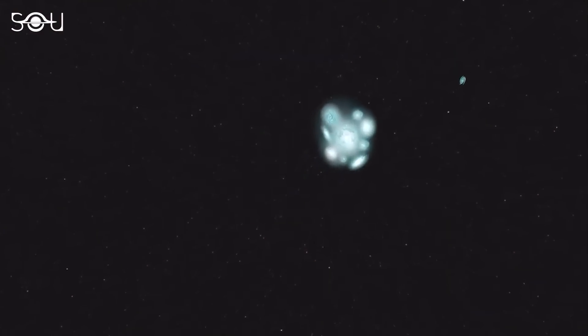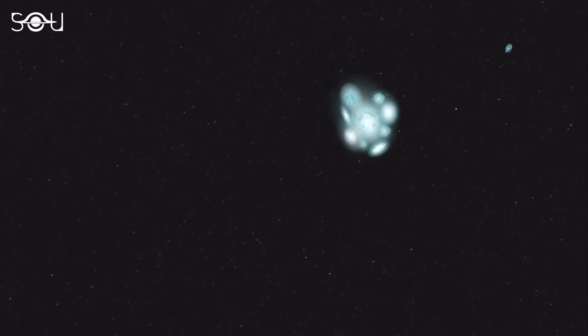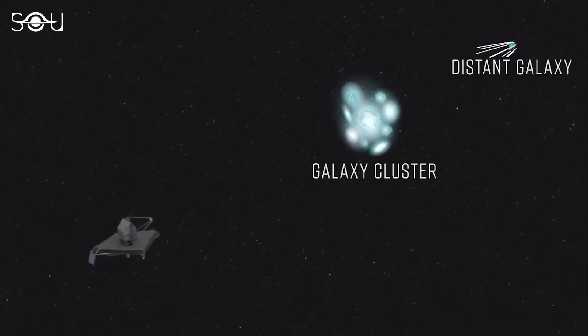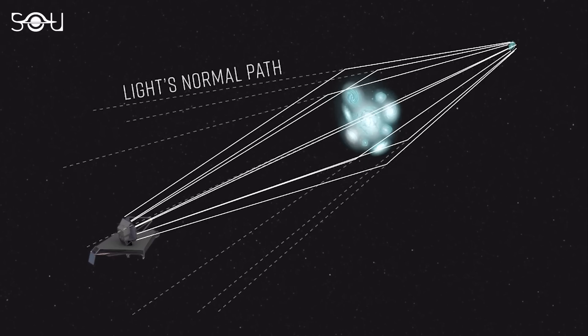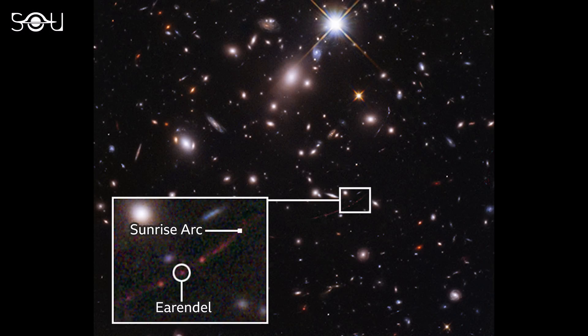Massive astronomical objects, such as galaxy clusters, distort the spacetime fabric around them. As a result of this distortion, the light from the foreground celestial bodies bends when it passes close to these massive objects. Because of this gravitational lensing, the background galaxy containing Arendelle appeared like an arc that the astronomers named the Sunrise Arc.